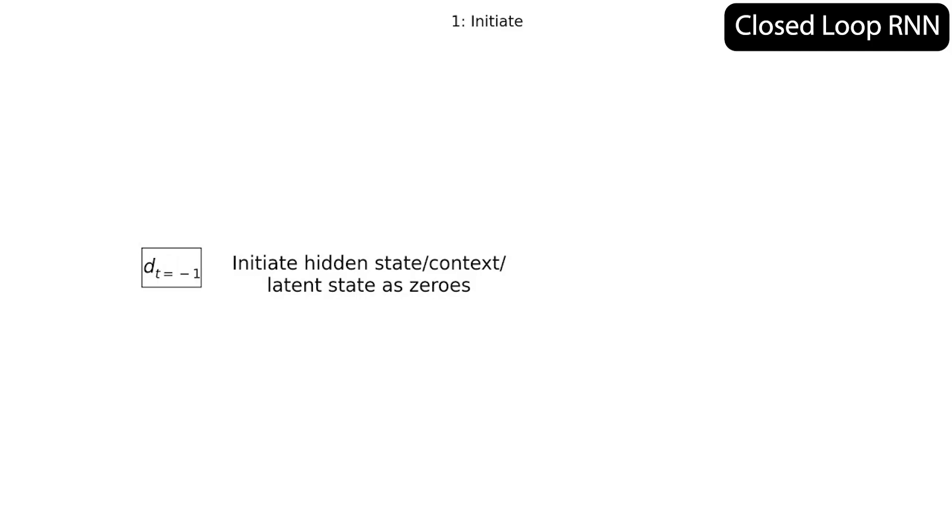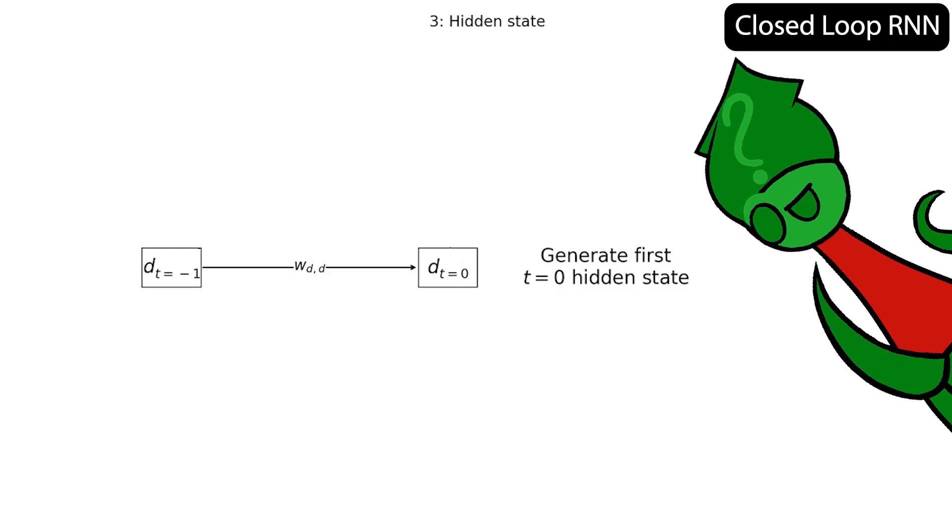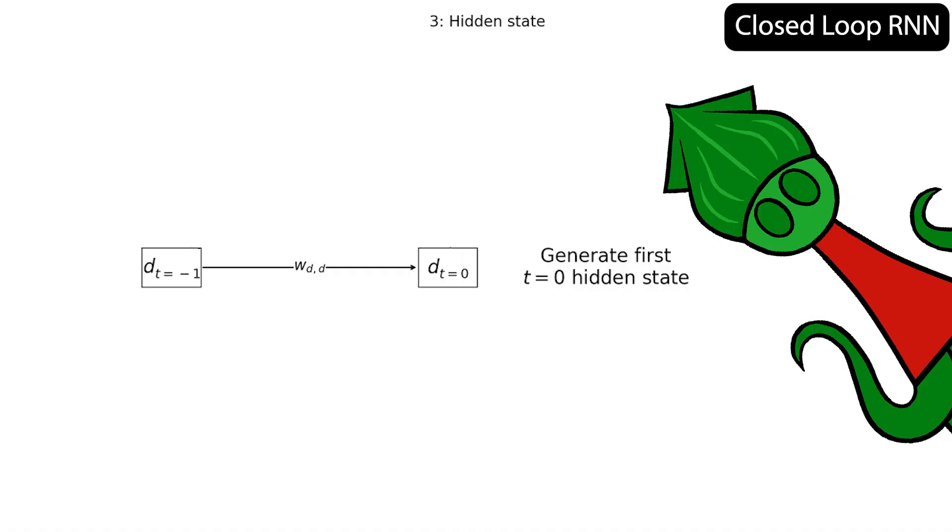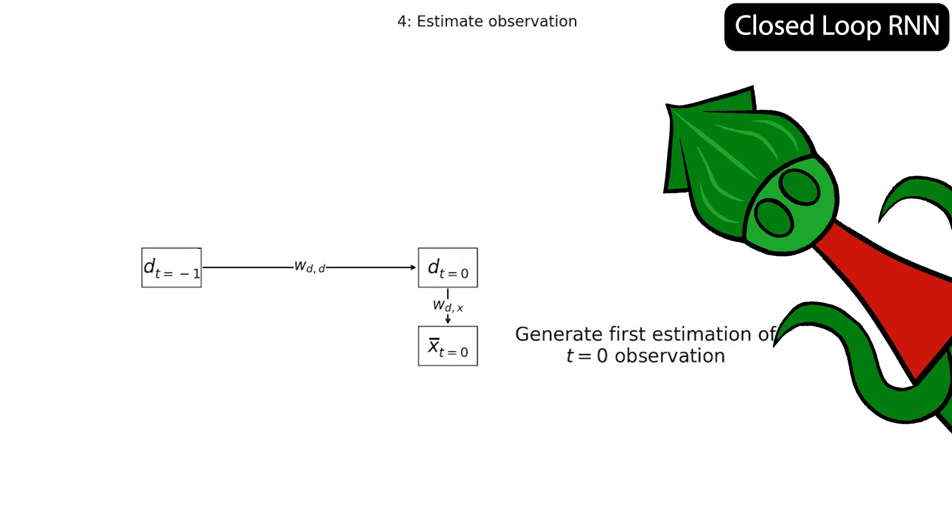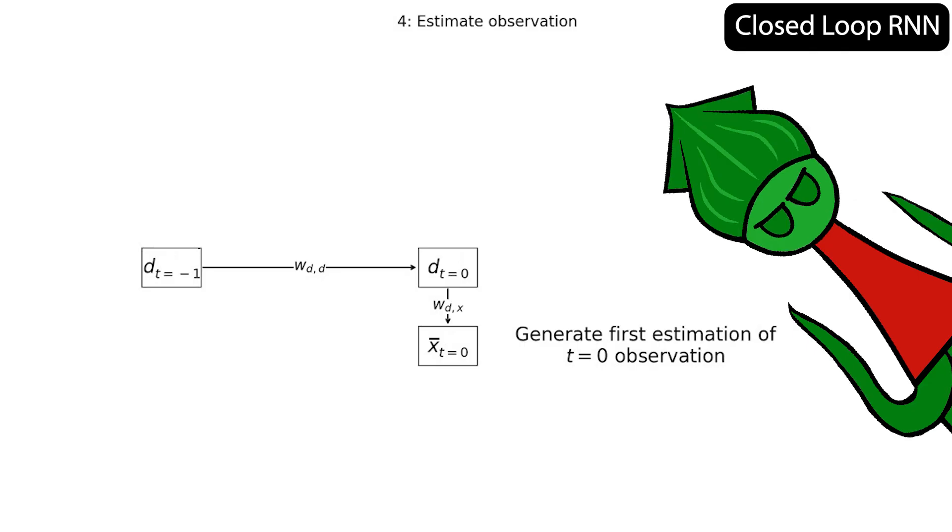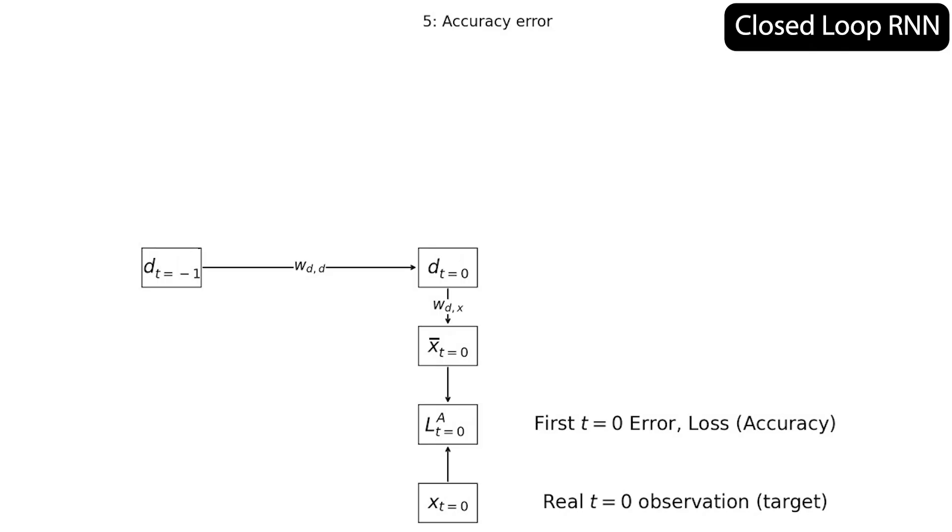But now the model uses that initial hidden state to make another hidden state at time t equals zero. What? It doesn't actually have any new information to put in here. What's the point? Anyway, the model uses this new hidden state to make an output, like a prediction. But how can the model predict anything based on nothing? Well, comparing the prediction to a real observation, a target, lets us measure an error, a loss value.